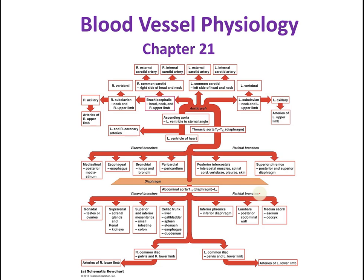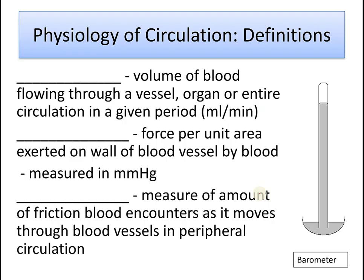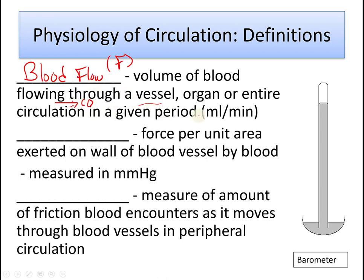What we're going to talk about next is the physiology of blood vessels — what keeps blood moving through the circulatory system. The first definition is blood flow, abbreviated as F. Blood flow is the volume of blood flowing through a vessel, such as the aorta, an organ, or the entire circulation in a given period of time. If it's blood flow through the entire circulation, that would be cardiac output. It's measured in milliliters per minute.